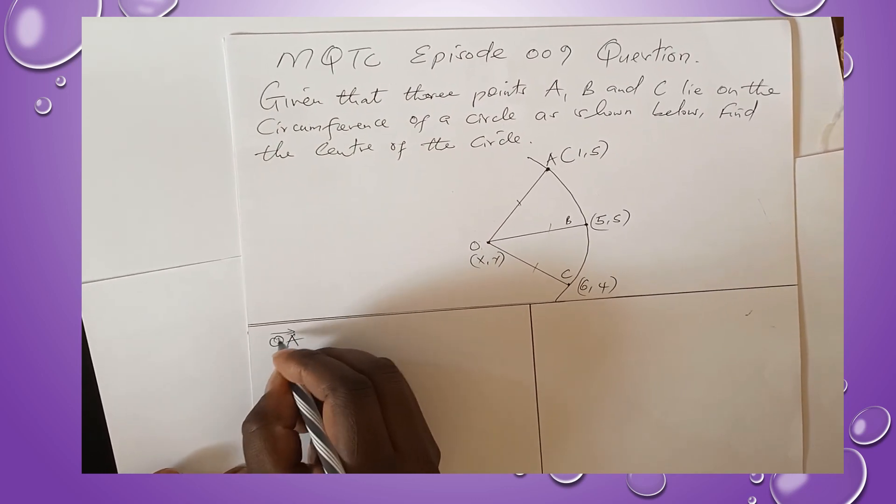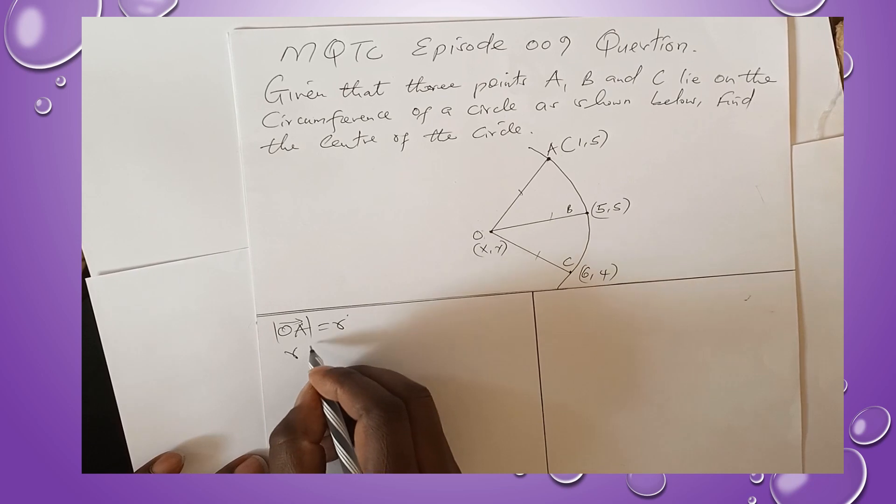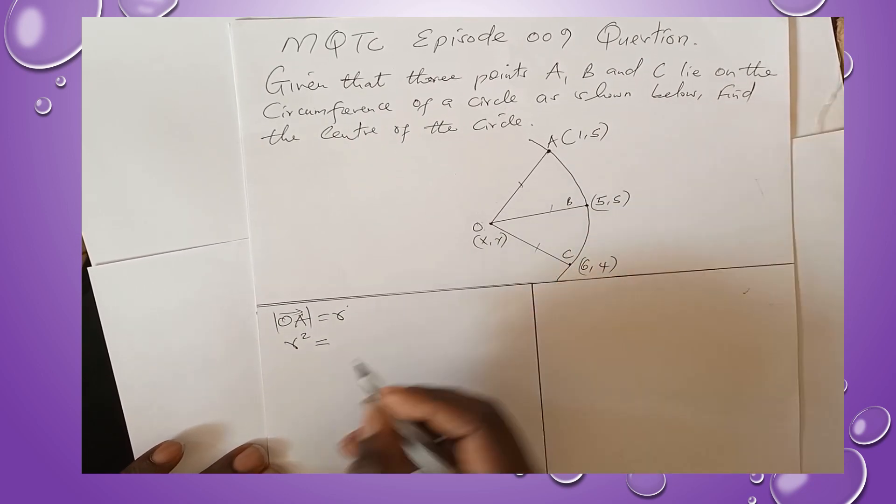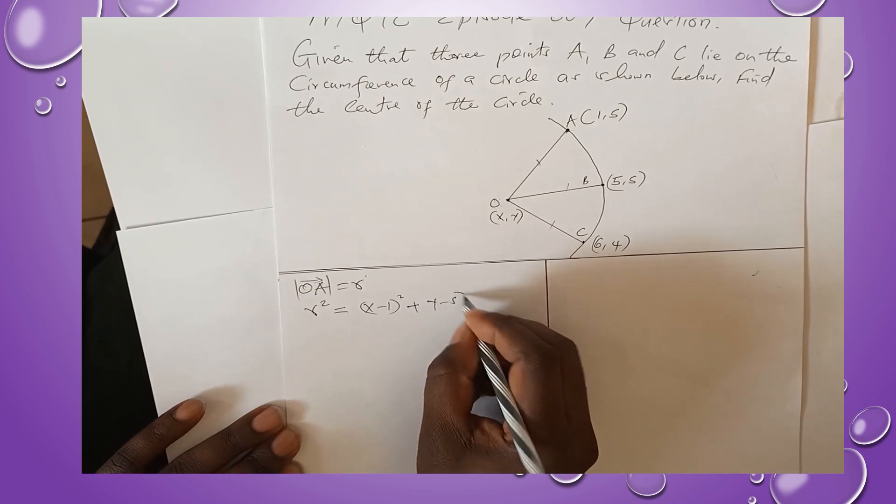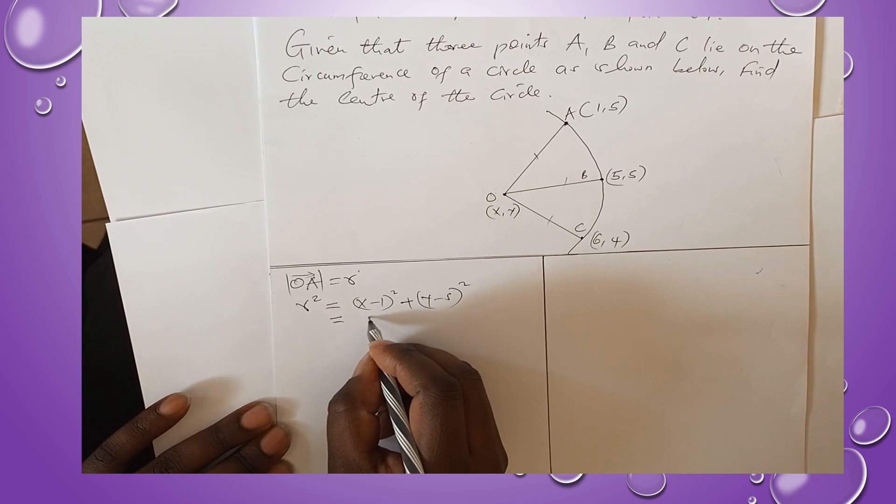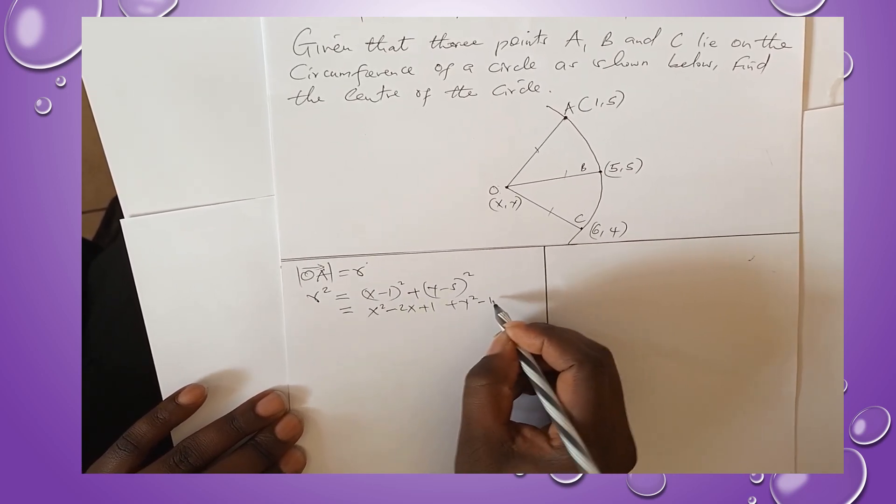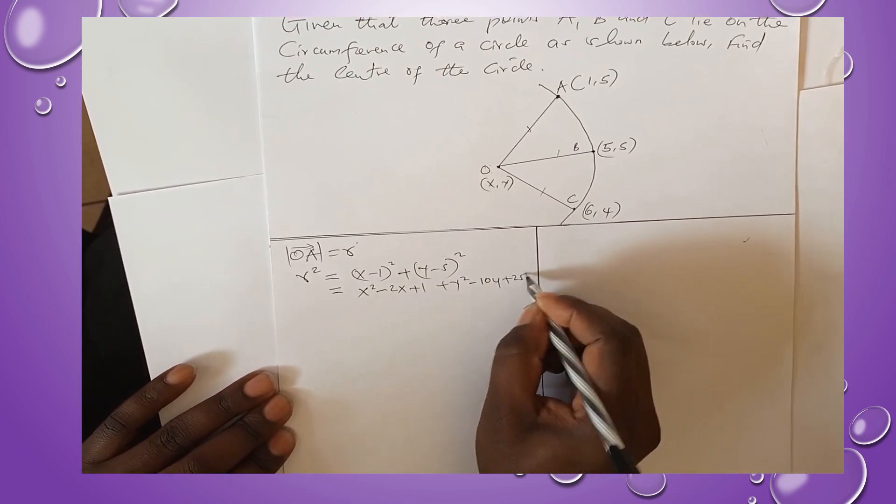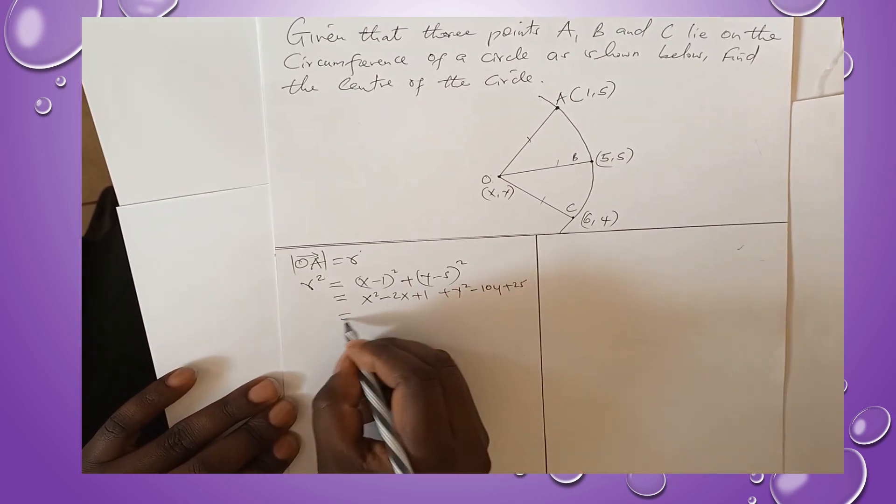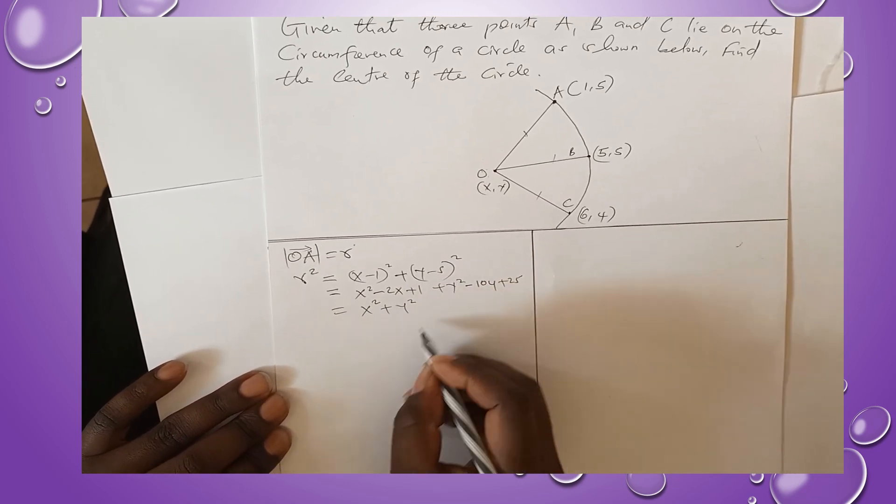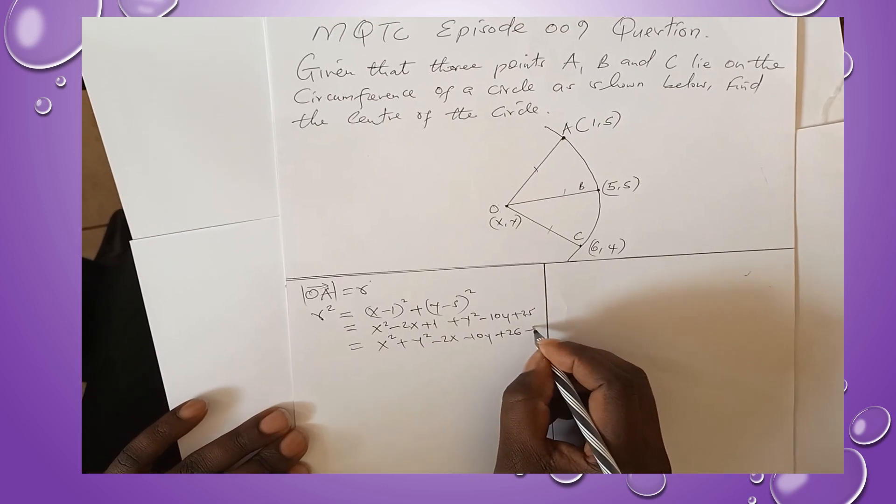Let's go down to calculations. For us to get OA, which gives us the radius in this particular case, we will start by saying r² = (x - 1)² + (y - 5)². Simplifying this one, it will give us x² - 2x + 1 + y² - 10y + 25. We can now put like terms together: x² + y² - 2x - 10y + 26. That becomes our first equation.